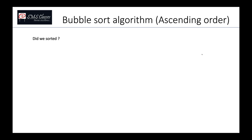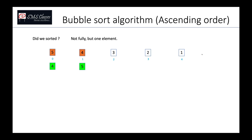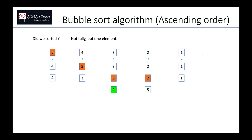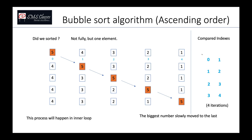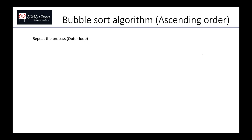We haven't fully sorted the array, but one element is in place. To recap: we compared indices (0,1), (1,2), (2,3), and (3,4) — four iterations total. The biggest number, five, bubbled to the last position. This sequence of comparisons is what your typical inner for-loop does in the program.